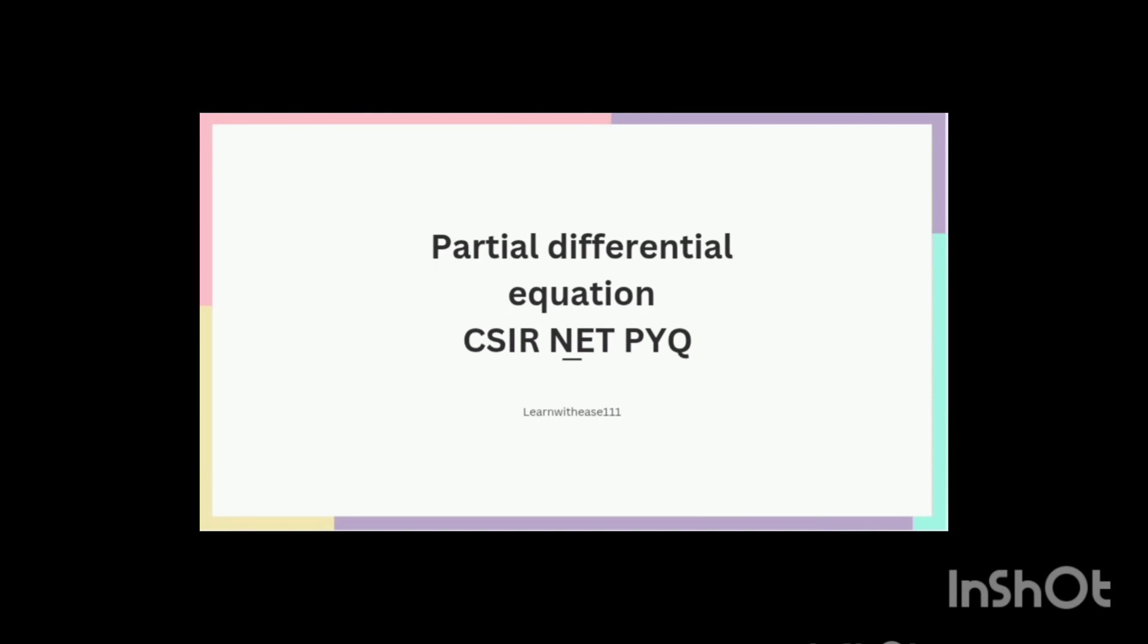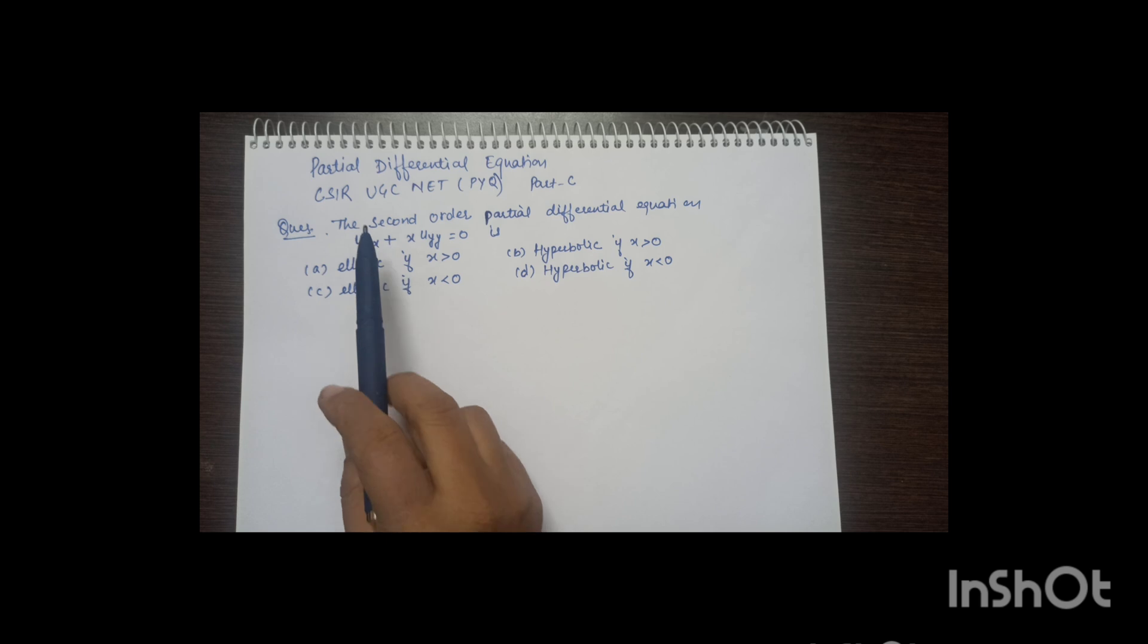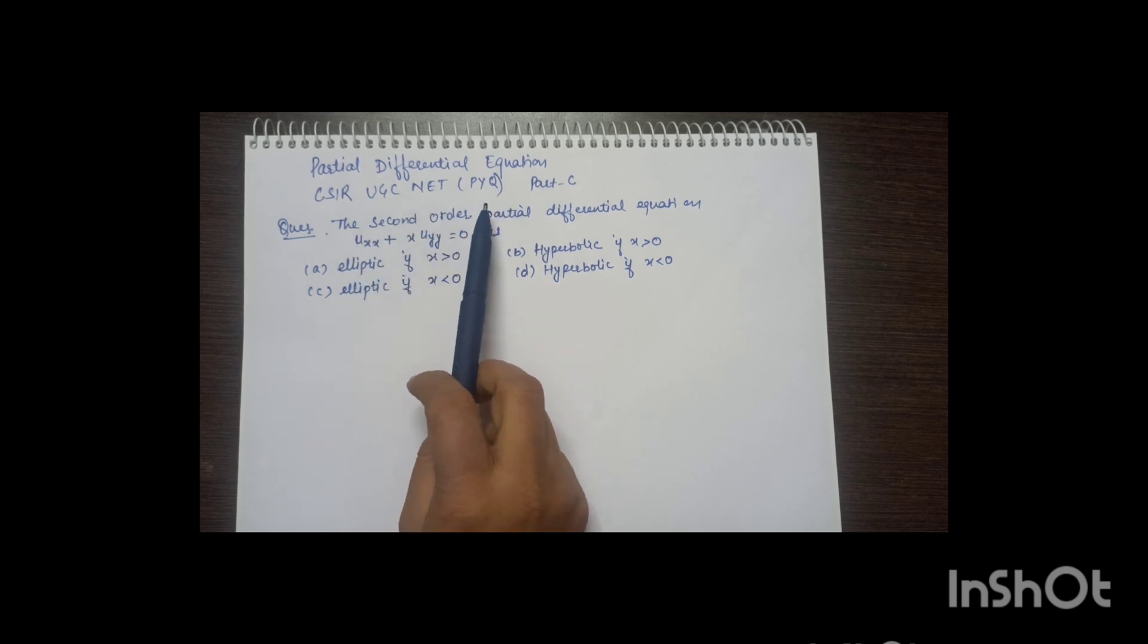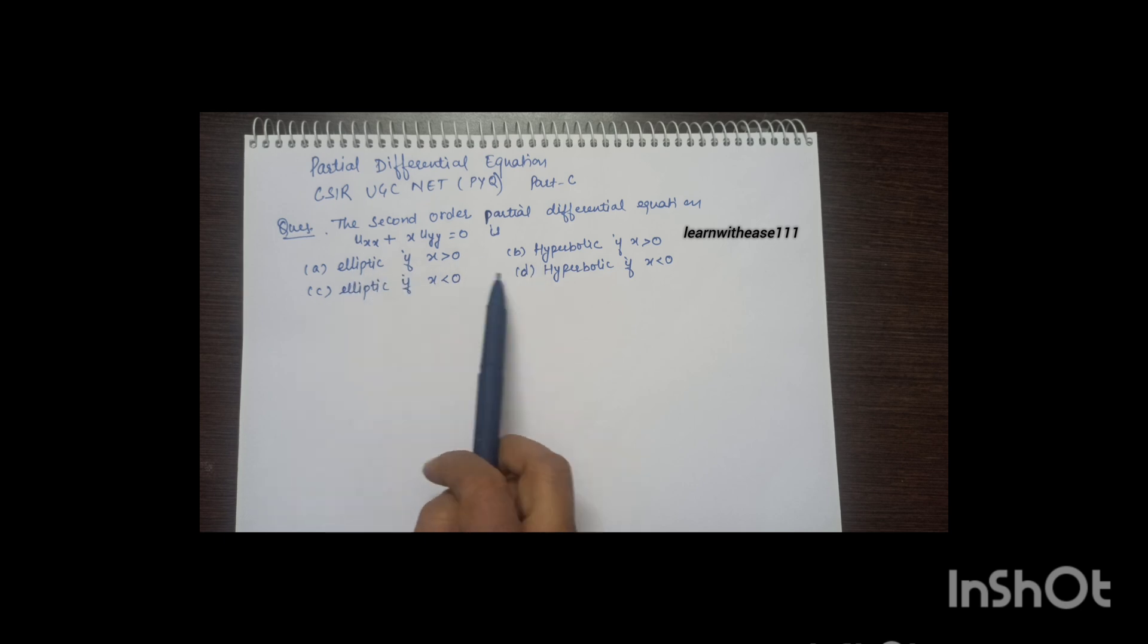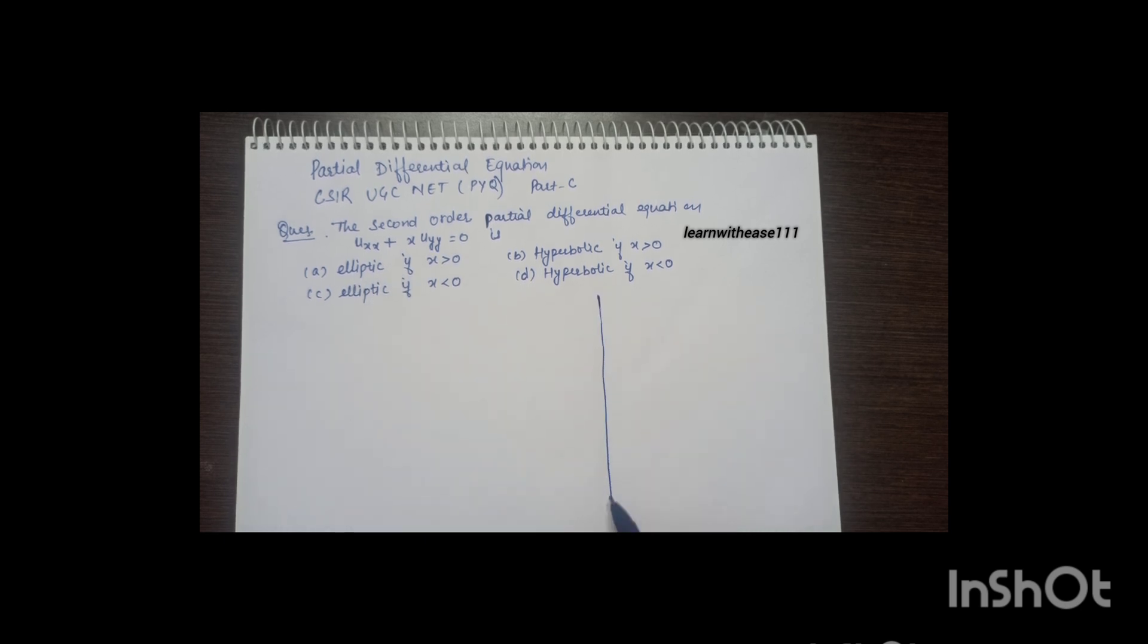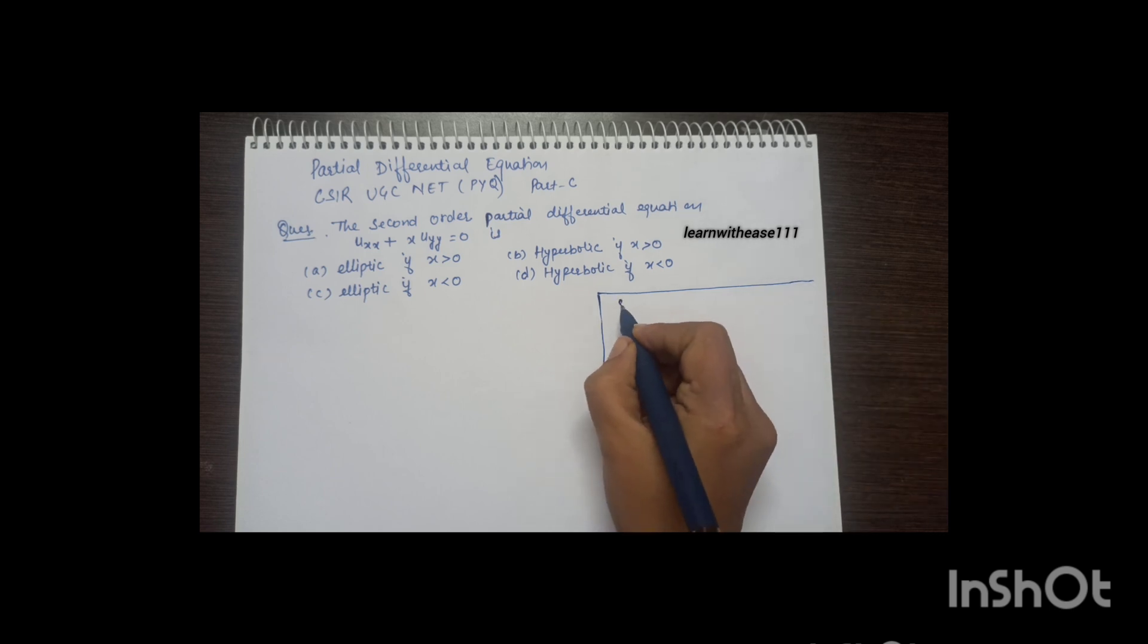This is a partial differential equations question. The second order partial differential equation uxx + xuyy = 0 is elliptic or hyperbolic depending upon restrictions on x.